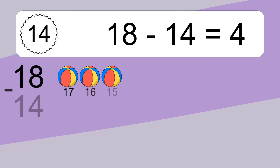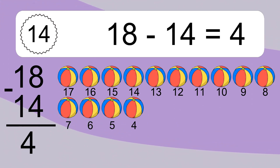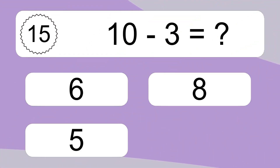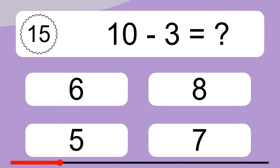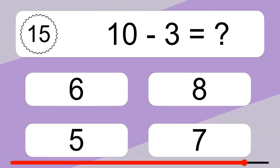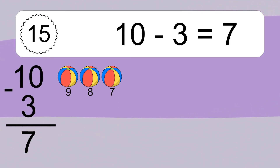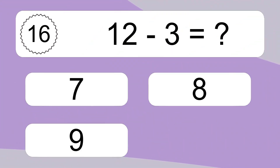18 minus 14 equals 4. Let's count it. 17, 16, 15, 14, 13, 12, 11, 10, 9, 8, 7, 6, 5, 4. 10 minus 3 equals what? 10 minus 3 equals 7. Let's count it. 9, 8, 7.